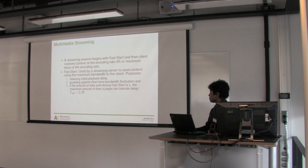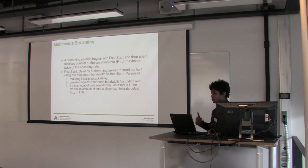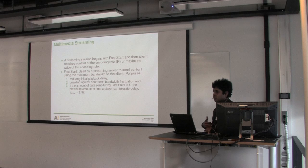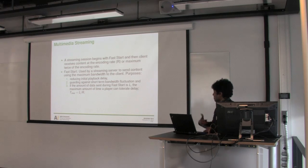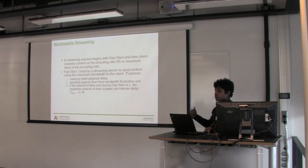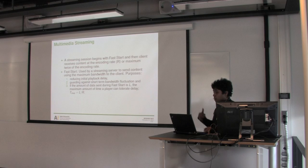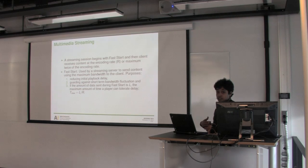I will begin with how multimedia streaming works and then how traffic shaping works. In multimedia streaming, the streaming server begins with a fast start to send content to the client, then sends content at the encoding rate or slightly above to the client. This is the constant bitrate streaming scenario. Fast start sends at a very high rate to the client, which reduces playback delay and guards against bandwidth fluctuations the client may face during playback.